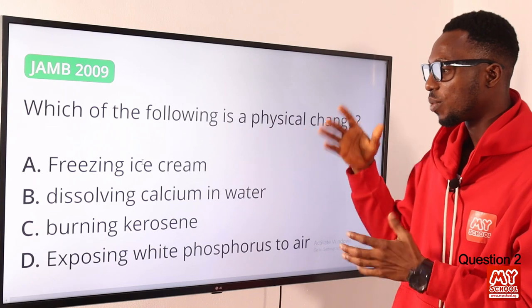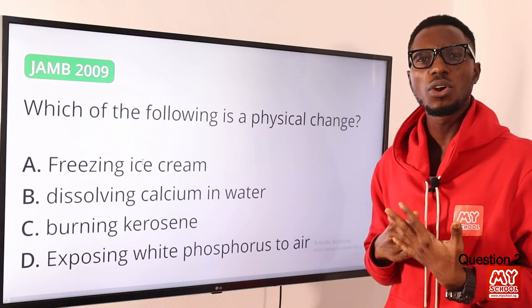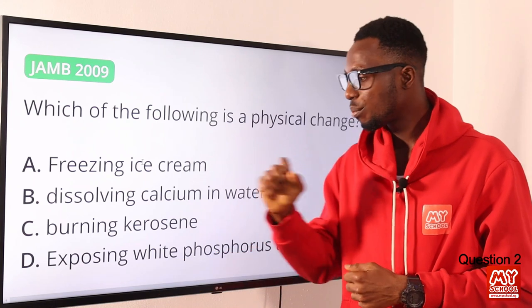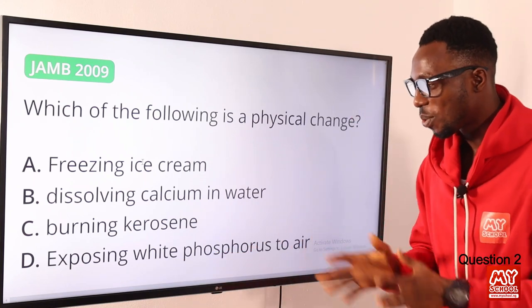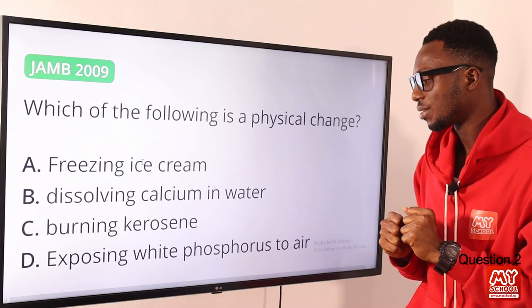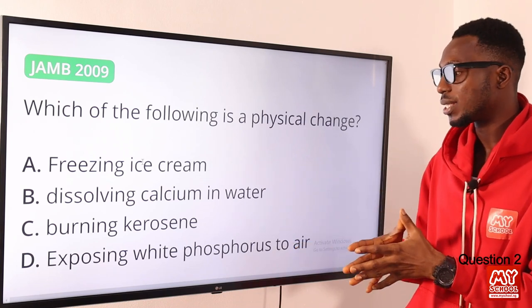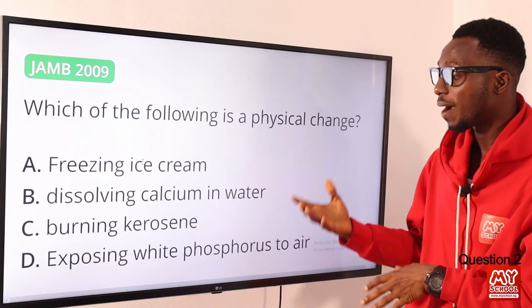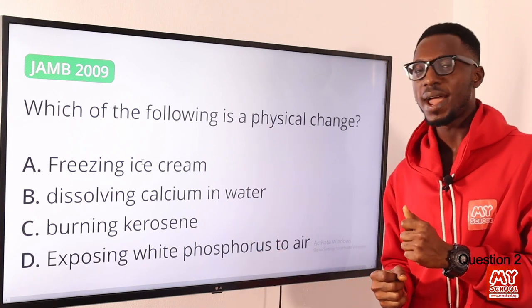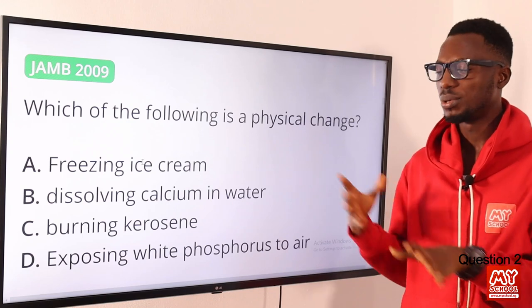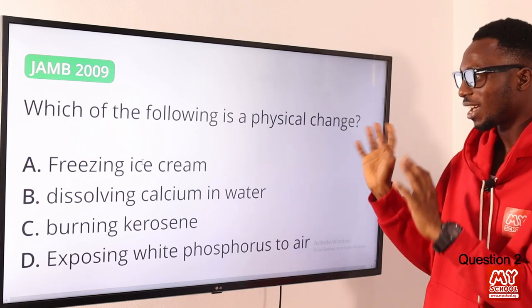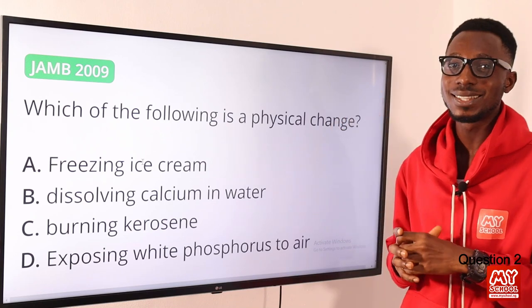Burning kerosene involves combustion — a chemical change. Exposing white phosphorus to air causes it to catch fire and burn with a dazzling flame; we must store white phosphorus underwater because it is more volatile than red phosphorus. Exposing it to air produces a greenish glow — a phenomenon called phosphorescence — also a chemical change. So the correct option is option A: freezing ice cream.